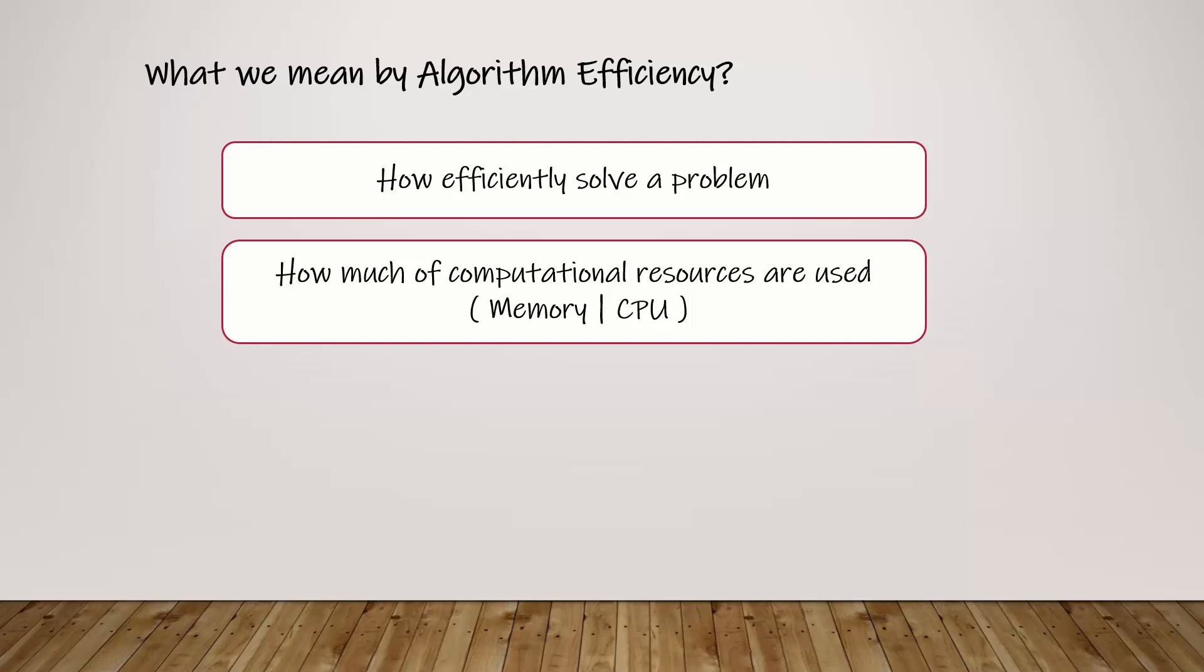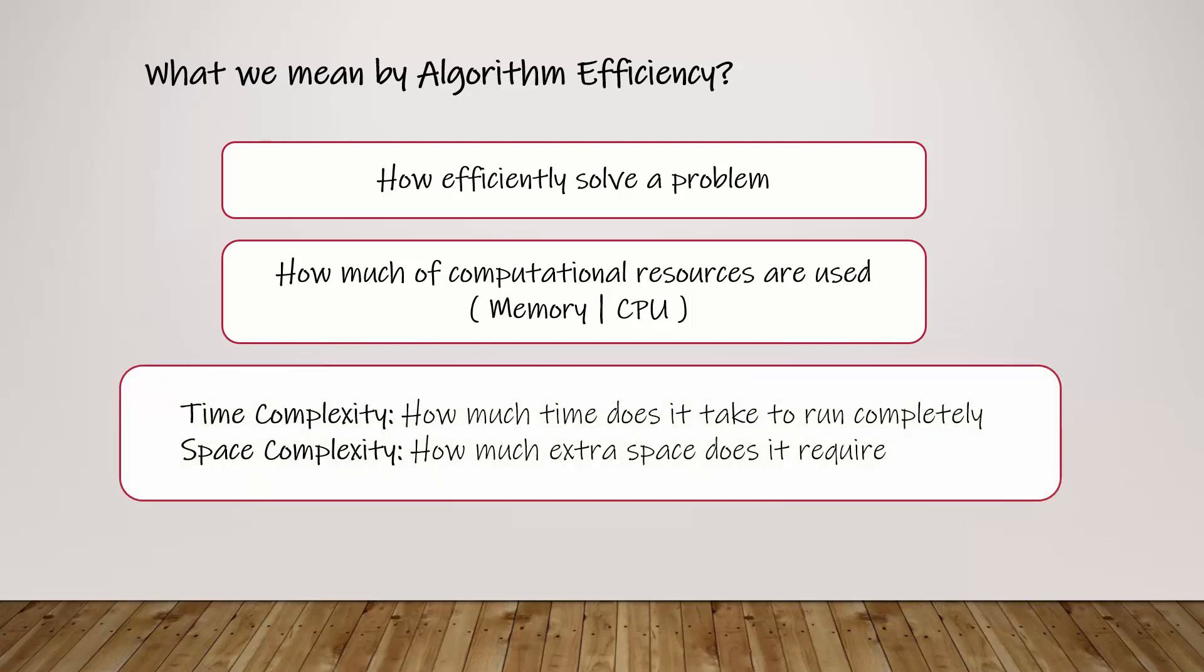To measure efficiency of an algorithm, we consider two things: time complexity and space complexity. Time complexity means how much time it will take. Space complexity means how much extra space it will require.